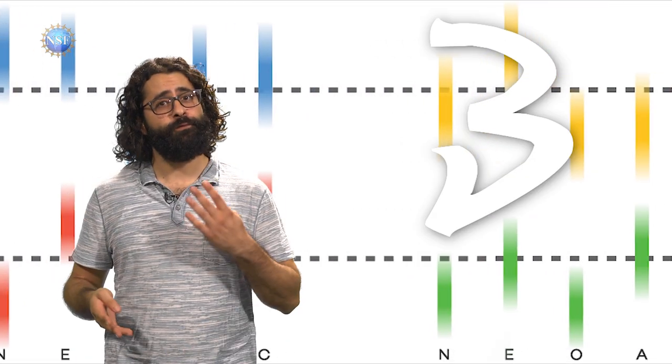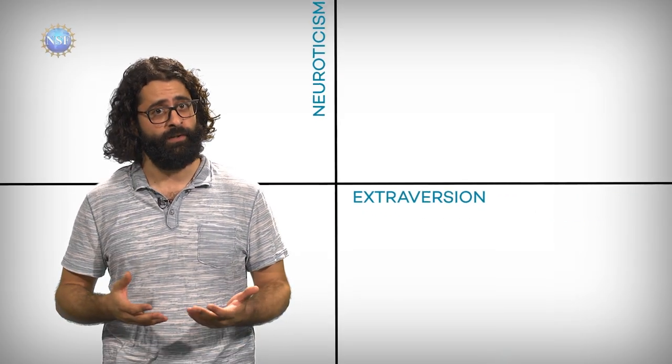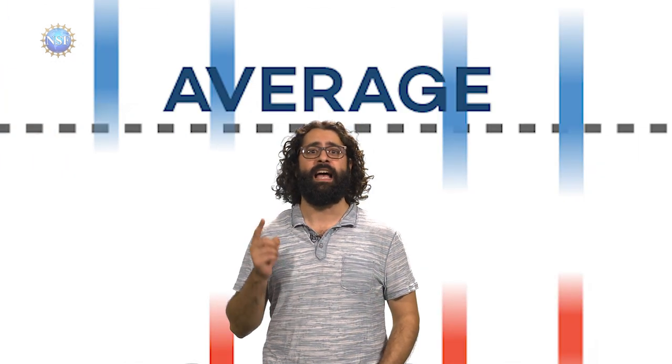Scientists have determined four personality types, using new data from surveys of one and a half million people, and a new algorithm to crunch the results. So what are the types? Average, reserved, self-centered, and role model.